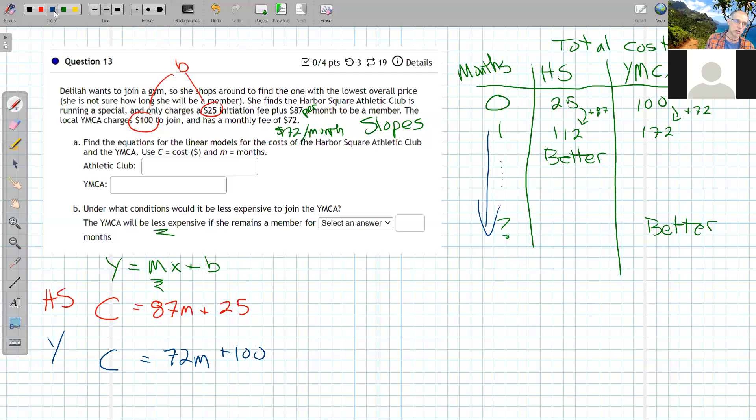The main intent of this problem is to exercise our skills in identifying linear equations and solving them. First, I want to find out when they're the same. To do that, I would set them equal: 87M + 25 = 72M + 100, and then solve for M. I'll do that, and then try a spreadsheet to see what happens.